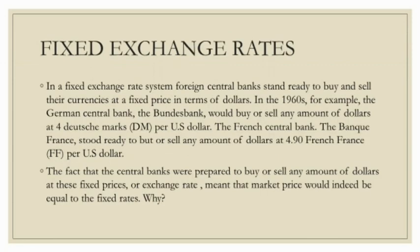Next, fixed exchange rates. In the fixed exchange rate system, foreign central banks stand ready to buy and sell their currencies at a fixed price in terms of dollars. In the 1960s, for example, the German central bank — the Bundesbank — would buy or sell any amount of dollars at 4.90 Deutsche Marks per US dollar. The fact that central banks were prepared to buy or sell any amount of dollars at the fixed price means that the market price will indeed be equal to the fixed rate.